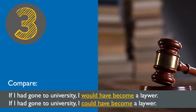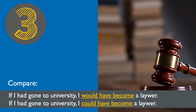Let's look at 'would' versus 'could' in the context of the third conditional. "If I had gone to university, I would have become a lawyer" is a definite past result — I would have been a lawyer and would not have considered any other possible careers. But "If I had gone to university, I could have become a lawyer" has a different meaning — it would have been possible, I would have been able to do that, but it's not certain what the outcome of the imaginary situation would have been.